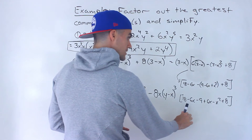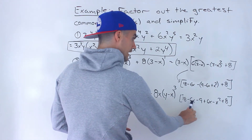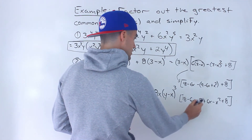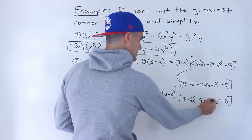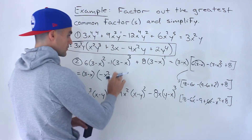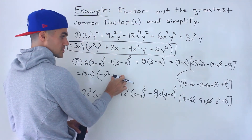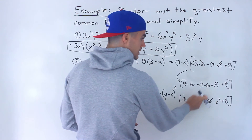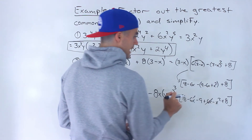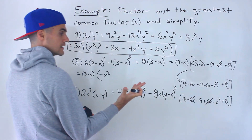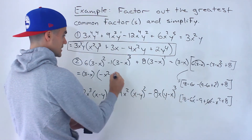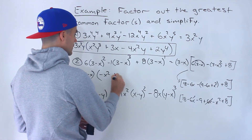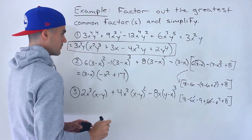Now combine like terms inside the bracket. The x² term is −x² by itself. The −6x and +6x net out to zero, so there's no x term. Then 18−9 is 9, plus 8 gives 17. So the bracket simplifies to −x²+17.